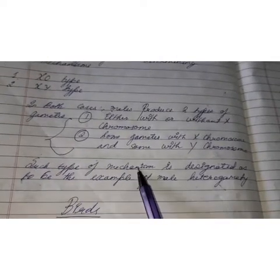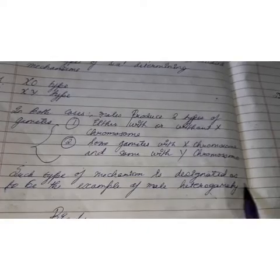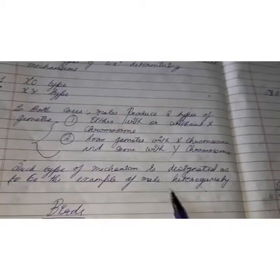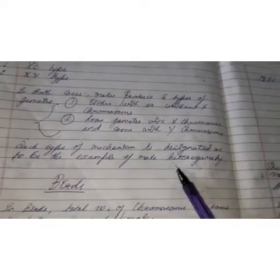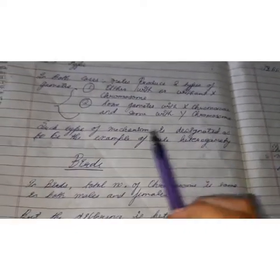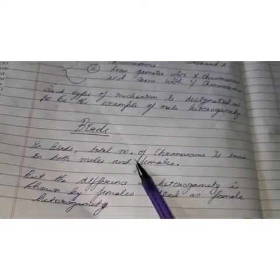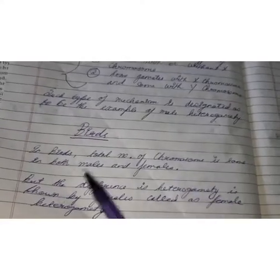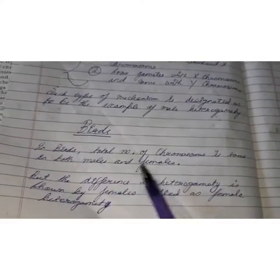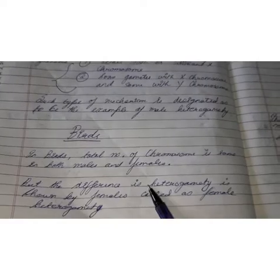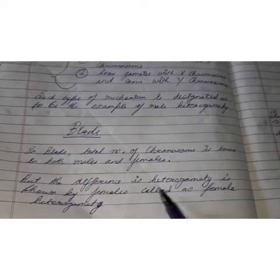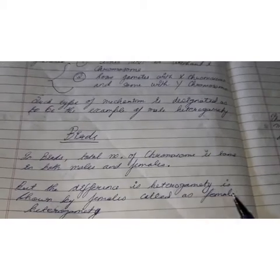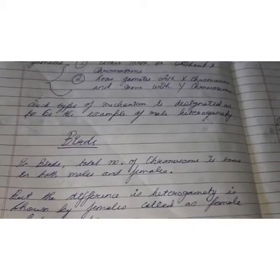This type of mechanism is designated as an example of male heterogamety — meaning males produce different types of gametes. In some other groups, the total number of chromosomes is the same in both males and females, but heterogamety is shown by the females and not by the males, and hence it is called female heterogamety.